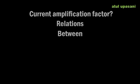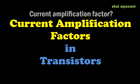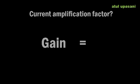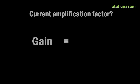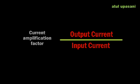In this lecture we are going to learn about the relations between the current amplification factors in transistors. When we take a ratio of output quantity to input quantity, that ratio is called gain. If that gain is of current type, then it is called the current amplification factor.